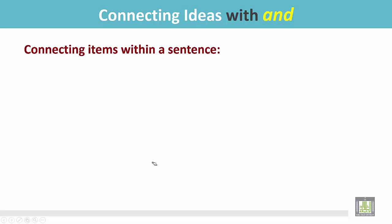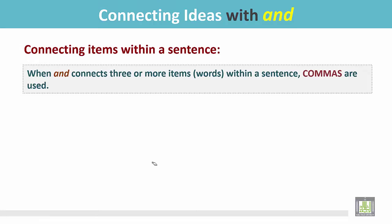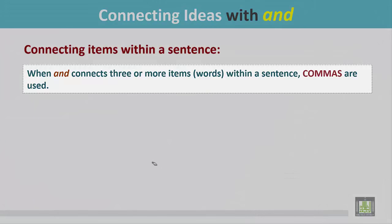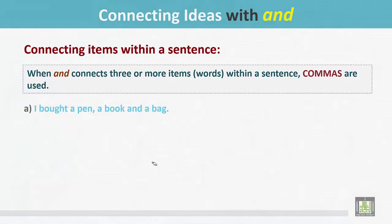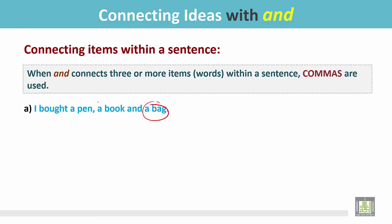When 'and' connects three or more items or words within a sentence, commas are used. Example A: 'I bought a pen, a book, and a bag.' There are three items in a series. The first two — a pen and a book — have a comma between them, but the third one, a bag, comes after 'and' with no comma before 'and.'